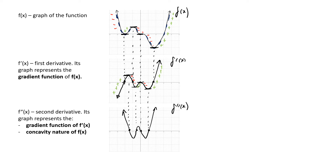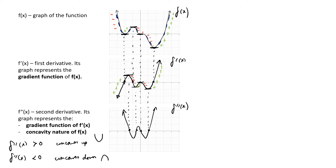Now f double dash x, our second derivative function, relates to our original function f of x in the sense that it tells us the concavity of f of x. When f double dash x is positive, the curve concaves up. We can see here this section where the curve is concave up — this is where f double dash x is positive. You can also see this section where it concaves up; that's where f double dash x is positive.